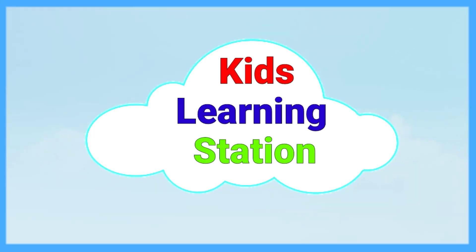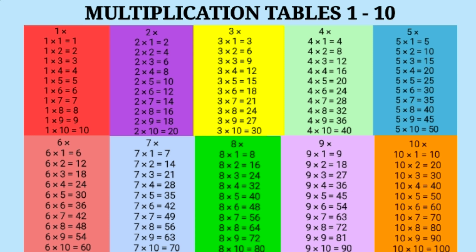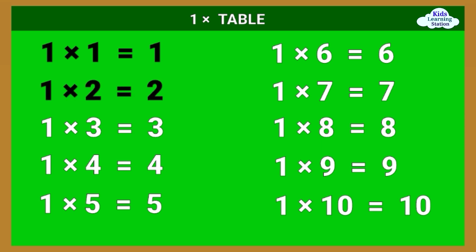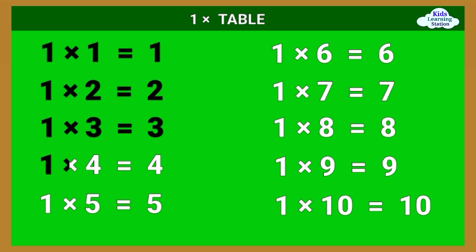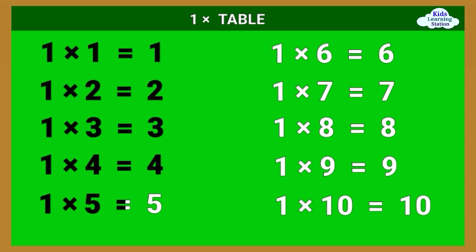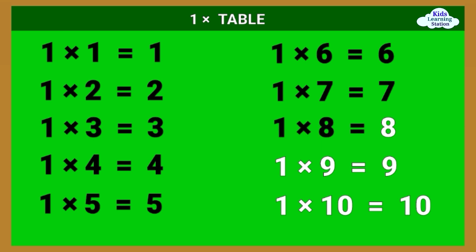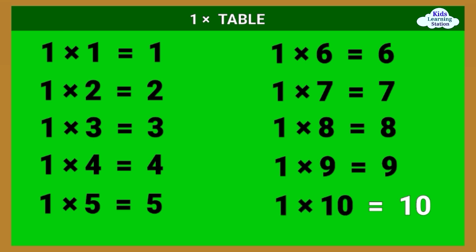Kids Learning Station multiplication tables 1 to 10. 1 times table: 1 times 1 equals 1, 1 times 2 equals 2, 1 times 3 equals 3, 1 times 4 equals 4, 1 times 5 equals 5, 1 times 6 equals 6, 1 times 7 equals 7, 1 times 8 equals 8, 1 times 9 equals 9, 1 times 10 equals 10.